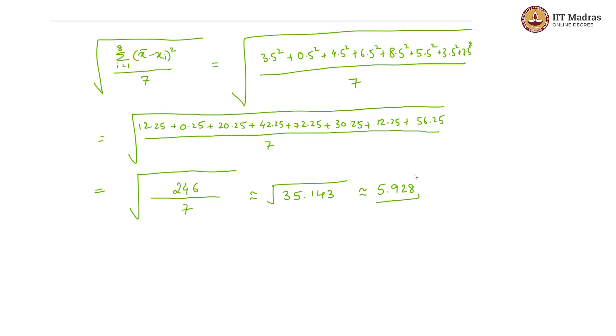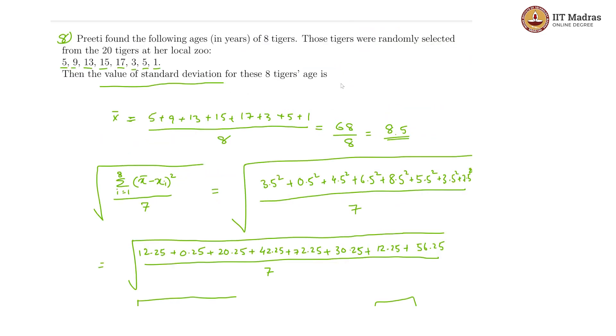So this is the sample standard deviation of the ages of these tigers. Our answer is 5.928 years.